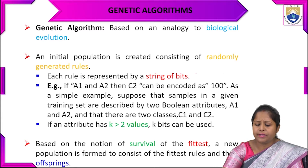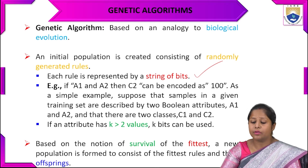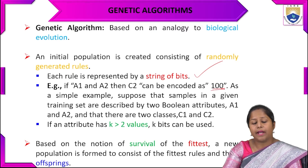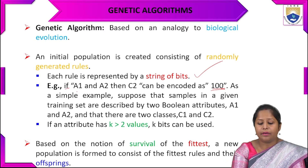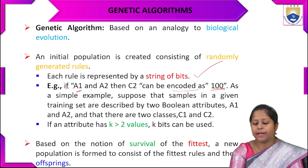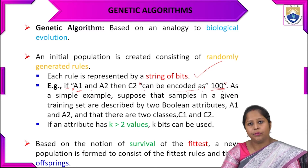Each rule has to be represented by a string of bits. For example, suppose we have chosen 100 as the encoding. The whole rule — if A1 and A2, then C2 — can be encoded as 100. That is one encoded rule.